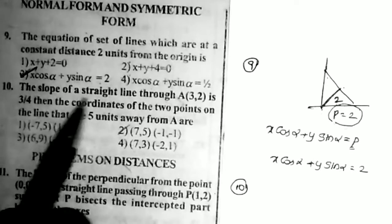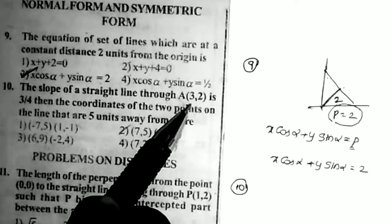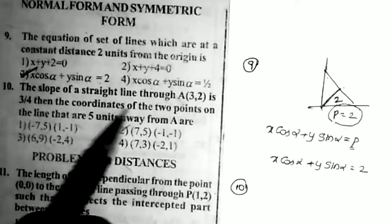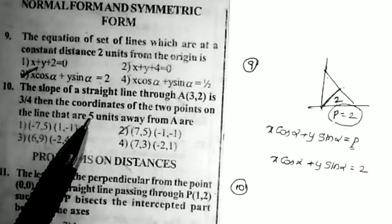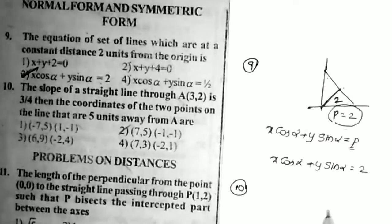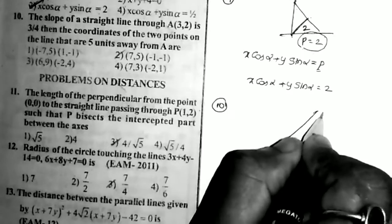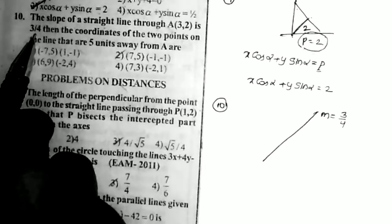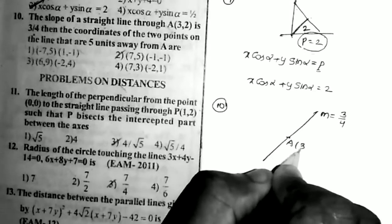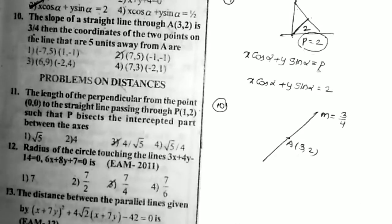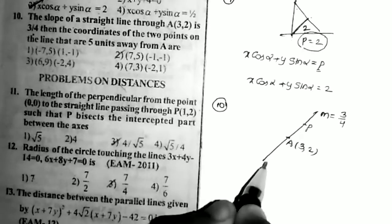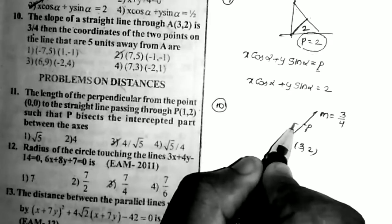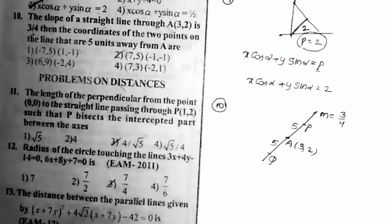Sum number 10: the slope of a straight line passing through point A(3, 2) is 3/4. What are the coordinates of two points on the line that are 5 units from point A? The slope is 3/4 and the line passes through A(3, 2). We need the coordinates of points at a distance of 5 units from A on this line.